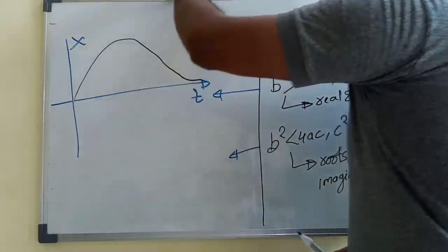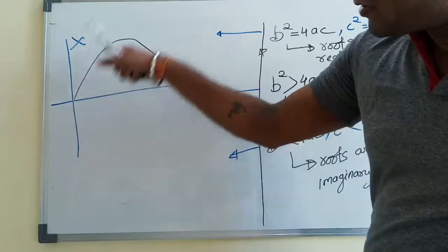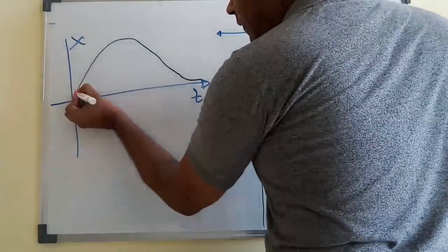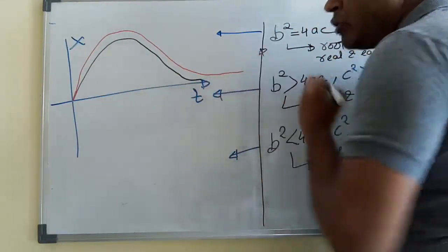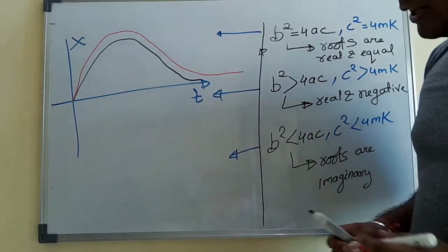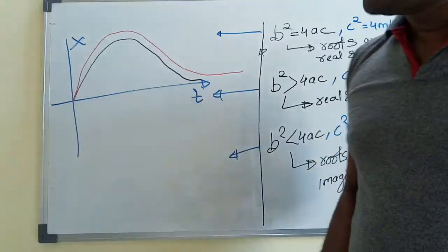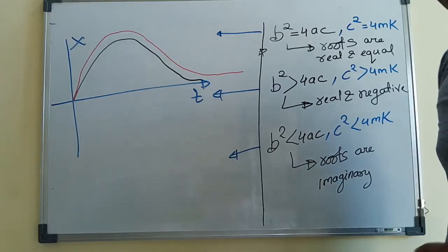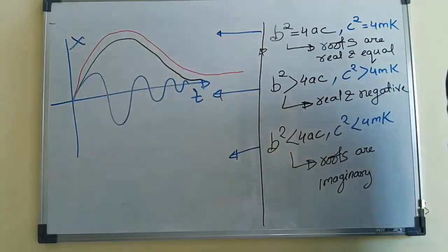In the over damped condition, you have provided more than critical damping, so the system will not oscillate. In the under damped condition, you have provided damping but it is not critical. In that case, the system will perform SHM.